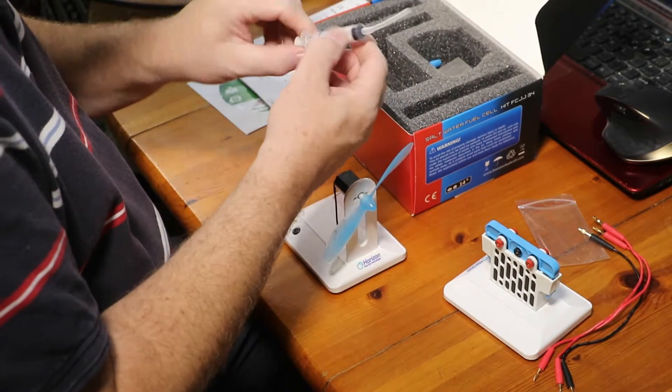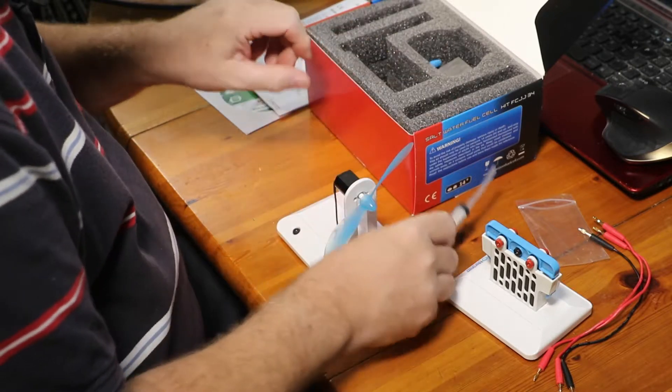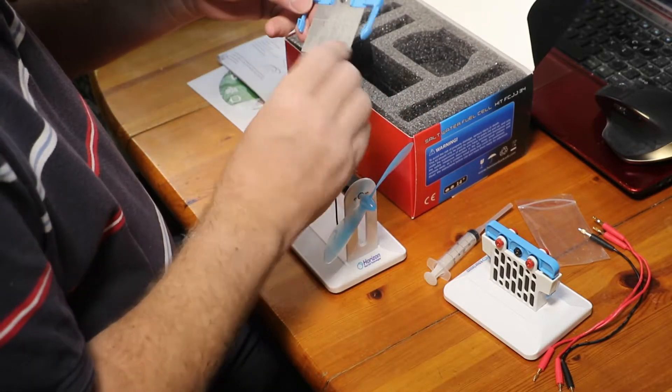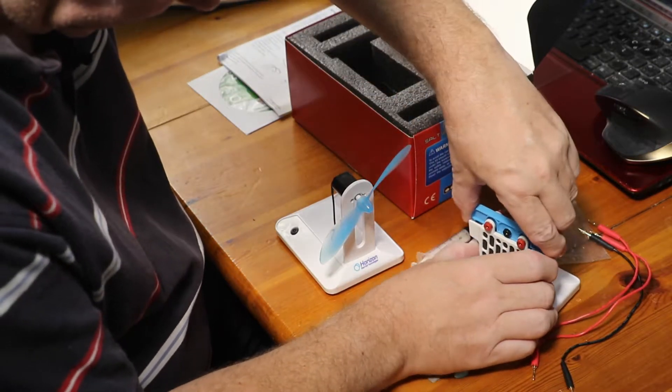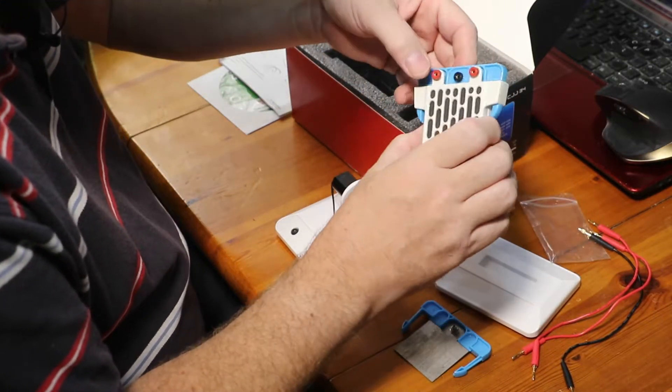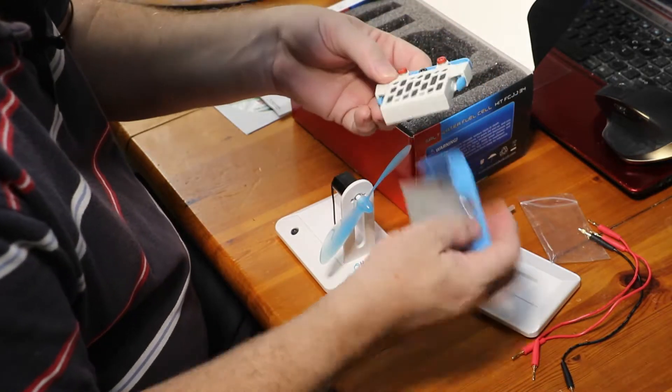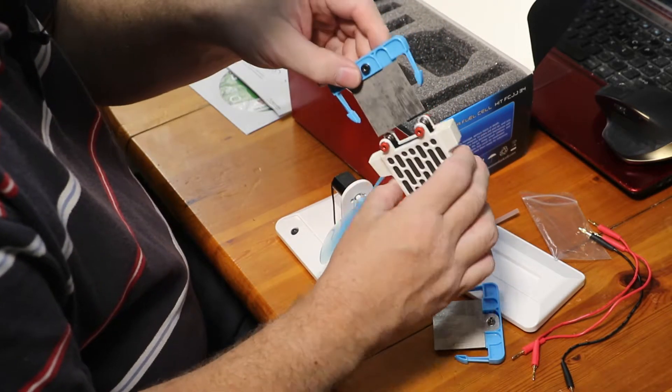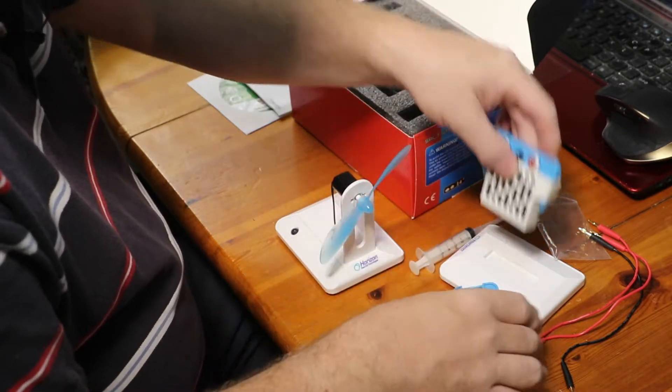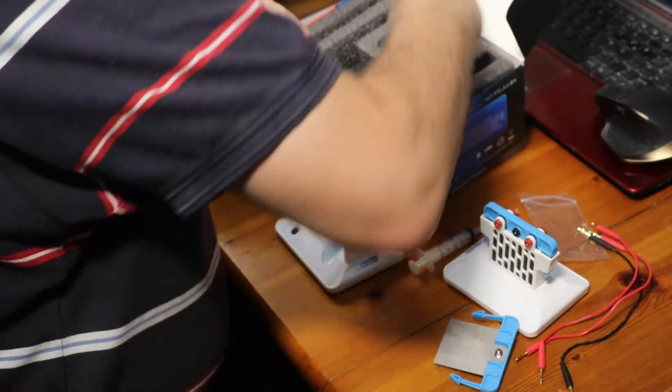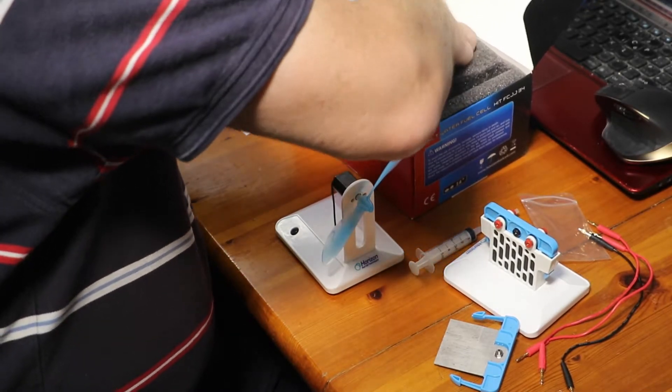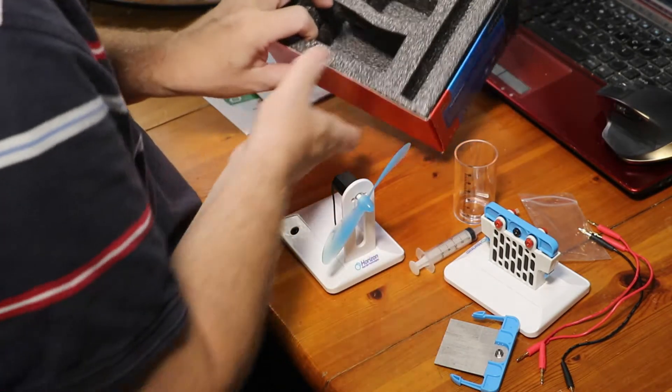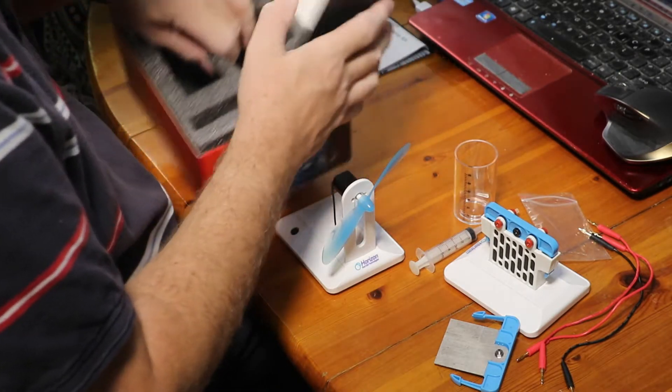I've got a syringe, five centimeter cube, and then I've got another spare plate by the looks of things. And we've got a little measuring cylinder, and that's everything inside.